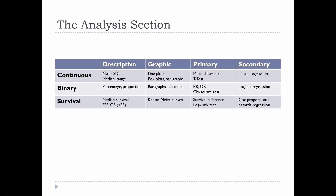If you have a binary outcome — say, headache or no headache — your descriptive statistics are percentage and proportion. Your graphical analysis is the bar graph and pie chart. Your primary statistical analysis is the relative risk or the odds ratio, and to test statistical significance you use the chi-square test. Your secondary analysis is logistic regression. If you have a survival outcome, your descriptive statistic is the median survival (EFS or OS), your graphical representation is the Kaplan-Meier curve, your primary outcome measure is the survival difference, your significance test is the log rank test, and your secondary analysis is Cox proportional hazards regression.